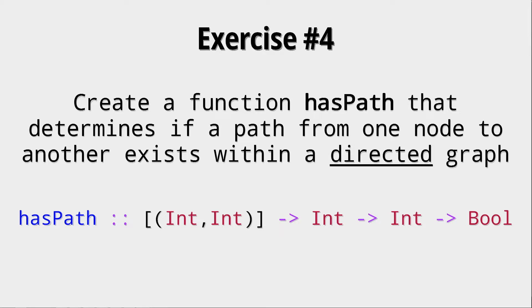The exercise is the following: create a function hasPath that determines if a path from one node to another exists within a directed graph. The function gets a list of the edges, then the starting node, then the end node, and it should return true if there is a path and false if there isn't. You do not have to check if a node is within this list of edges or not. Pause the video now.